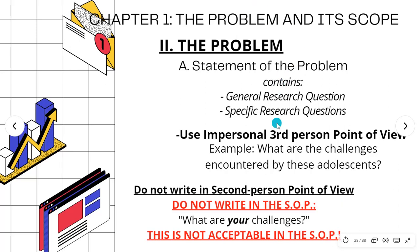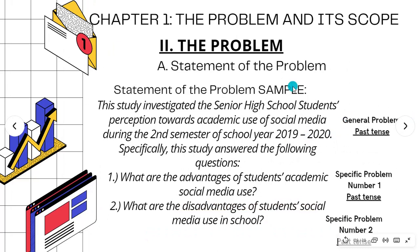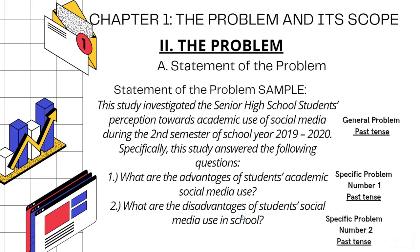The SOP must always use third-person point of view. There is a general problem stated in one sentence, followed by specific problems listed below. For example: 'This study investigated students' perception towards academic use of social media during the second semester of school year 2019–2020. Specifically, this study answered the following questions.' Then specific question 1 and specific question 2 are listed. The general problem is one sentence; then 'specifically, this study seeks to answer the following questions' introduces the numbered specific questions.